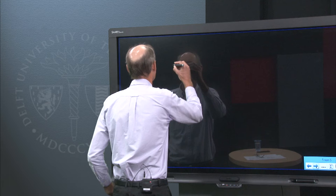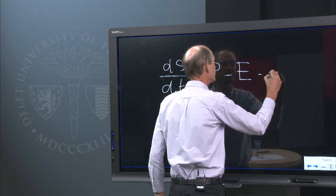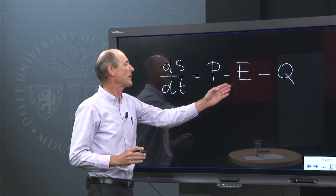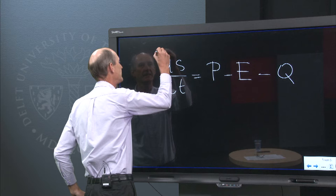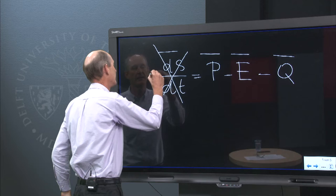In the previous module we looked at the water balance. The change in storage equals the precipitation minus the evaporation minus the runoff. The water balance links precipitation, evaporation and runoff. If we take the average over many years, this storage change term becomes very small and we may often disregard it.